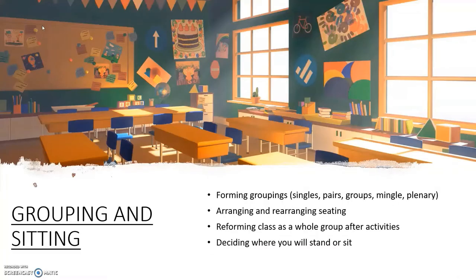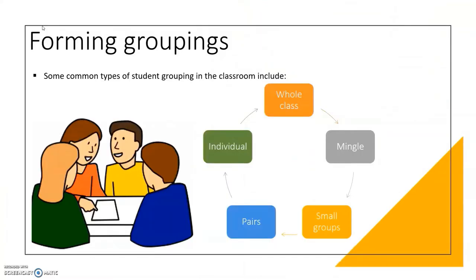Grouping and seating includes forming groupings, arranging and rearranging seating, forming the class as a whole group after activities, and deciding where you will stand or sit. Before starting your activity, you need to find or choose the most appropriate grouping type. Common types of student grouping include a whole class working together, mingle — whole class moving around and mixing as individuals, small groups of three to eight people, pairs, and individual working. In any of your lessons, you may include work that involves a number of these different arrangements, enabling a variety of different experiences. You also shouldn't forget reforming the class as a whole group after activities.